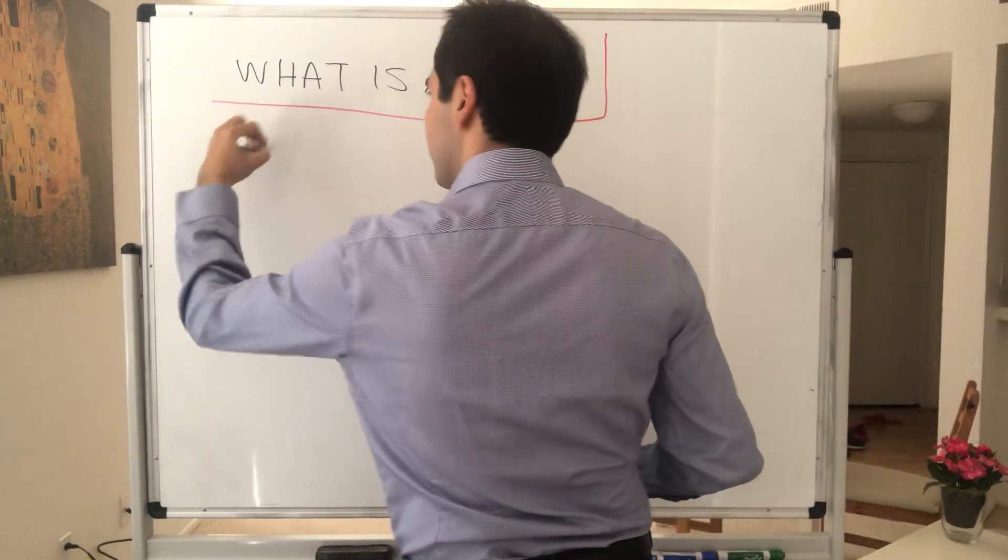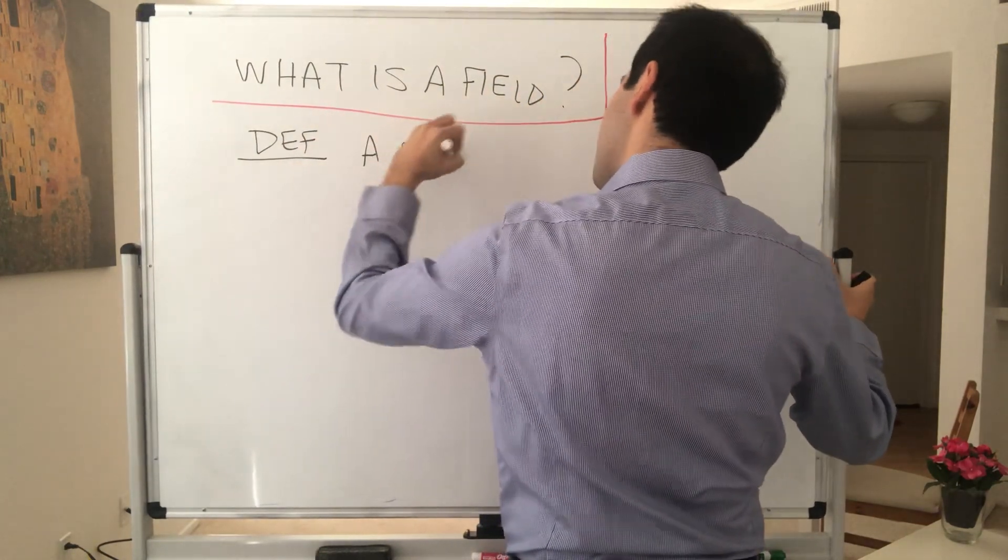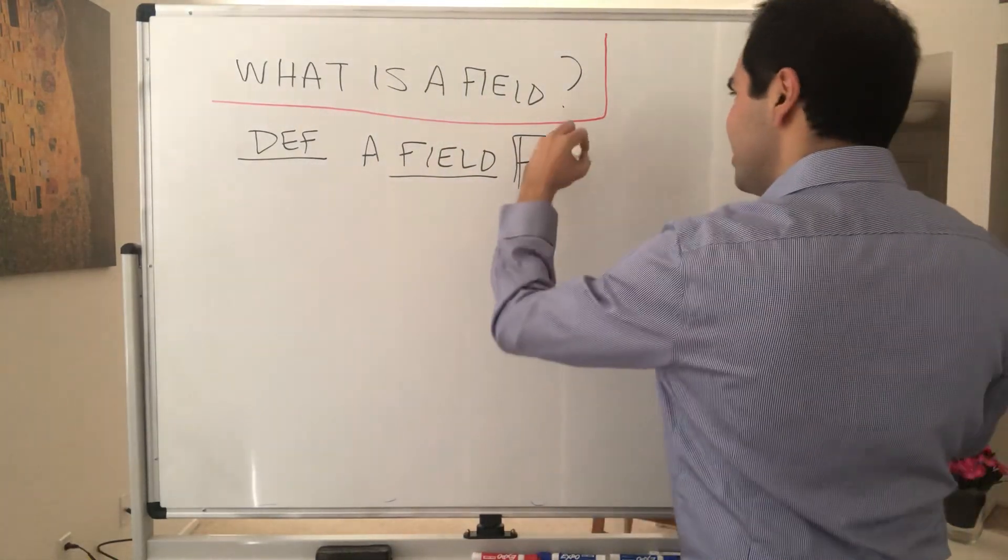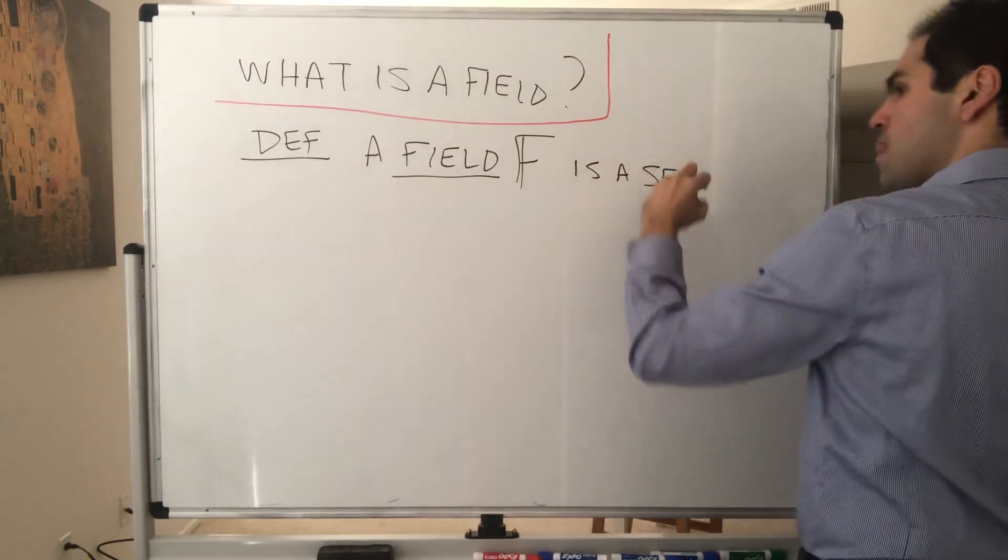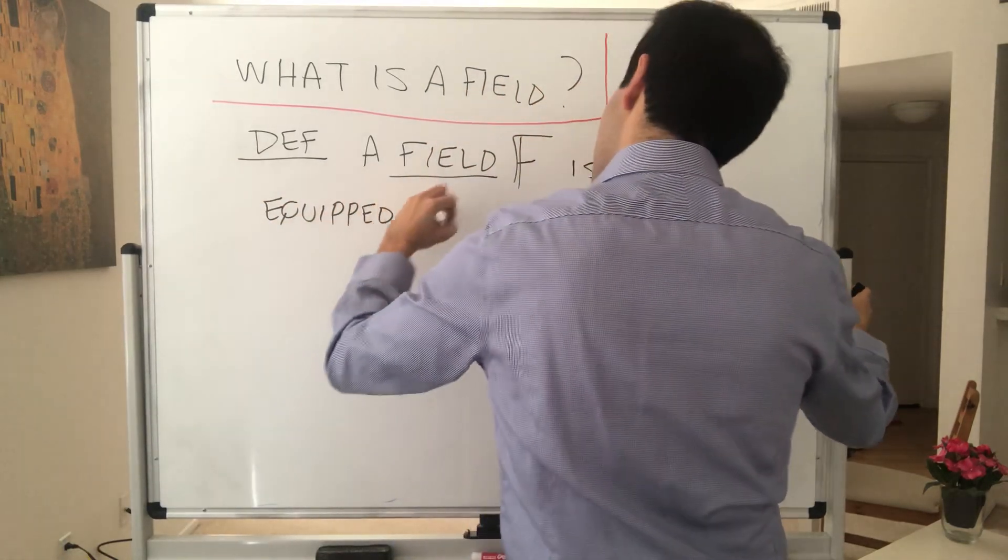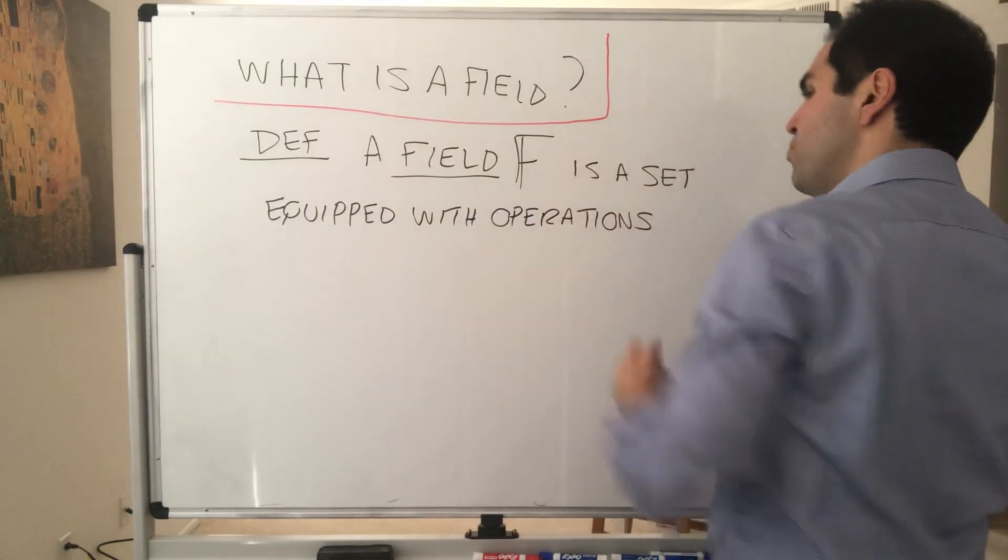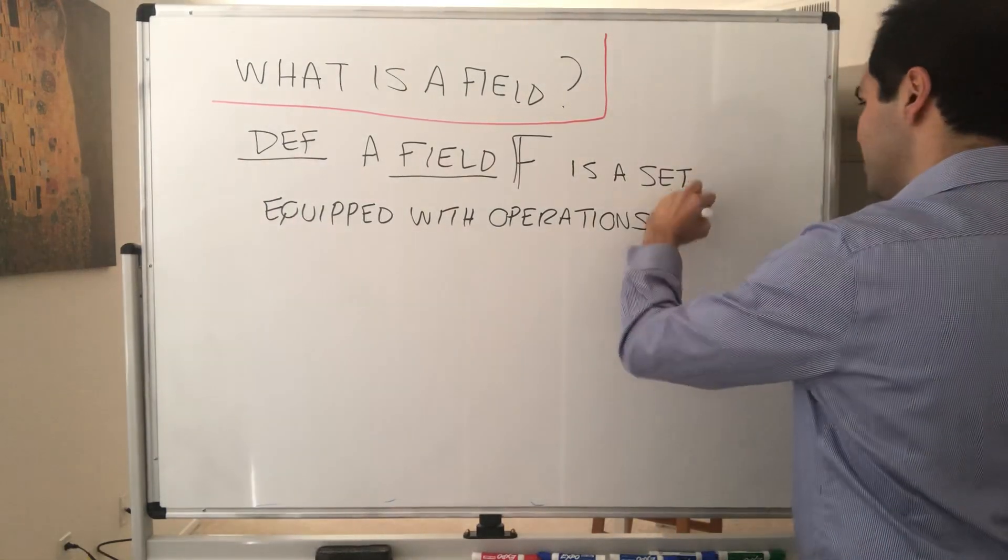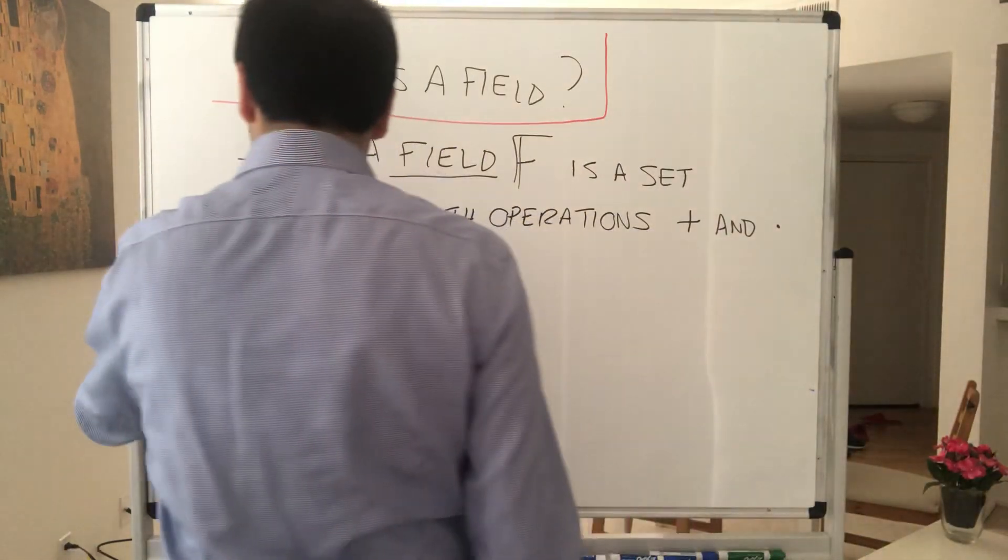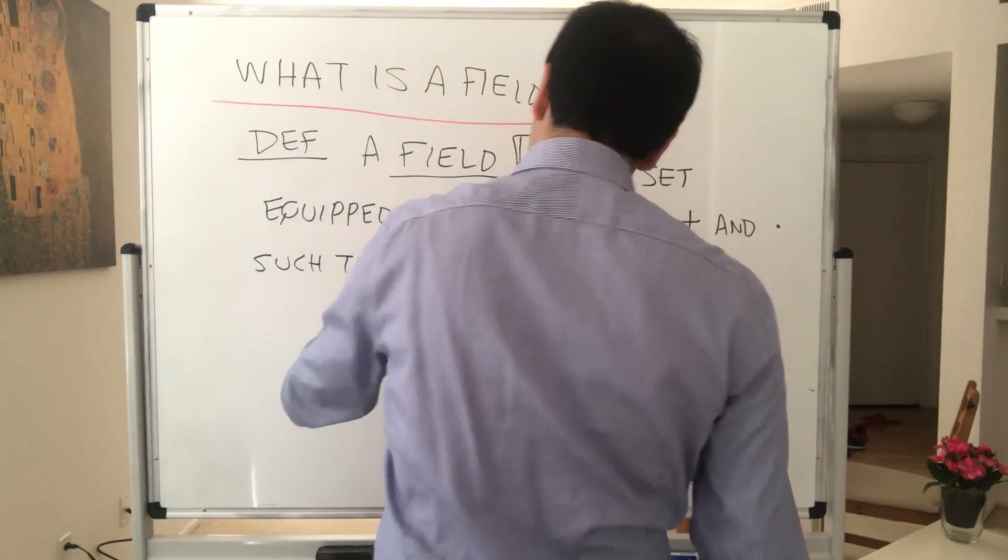One thing that distinguishes the real numbers from its cousins, the integers or the natural numbers, is that the real numbers form a field, which is just a system where you can add, subtract, multiply, and divide numbers. So here's a definition. A field F, press F to pay respects, is just a set equipped with operations, basically equipped with addition and multiplication, plus and times, such that the following properties are true.